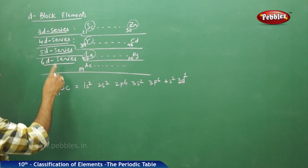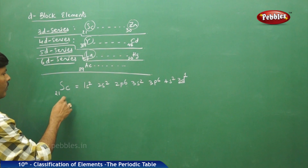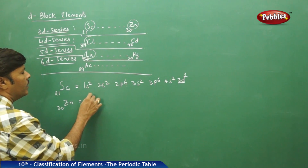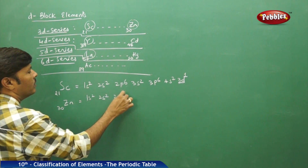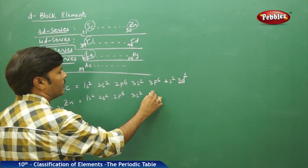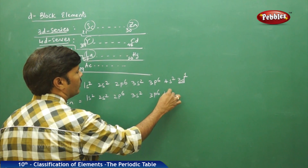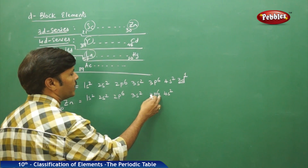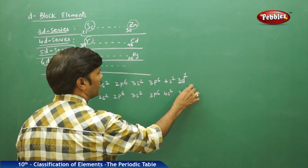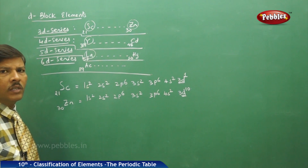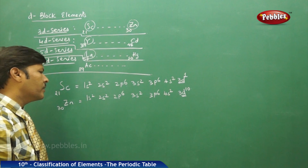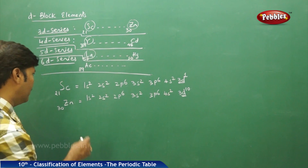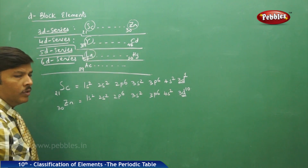Therefore, scandium belongs to d-block. For zinc similarly: 1s2, 2s2, 2p6, 3s2, 3p6, 4s2, 3d10. The 30th electron of zinc is the differentiating electron and it enters into the 3d orbital. That is why both scandium and zinc belong to d-block.